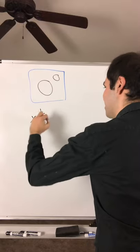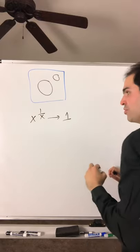Because take x to the 1 over x. That goes to 1 as x goes to 0 plus.